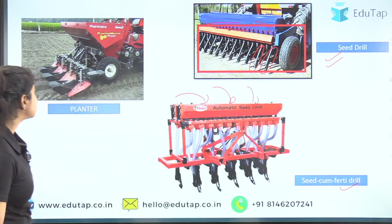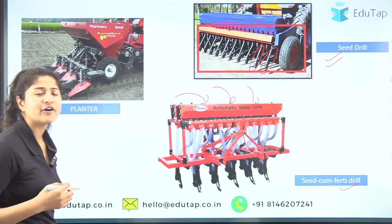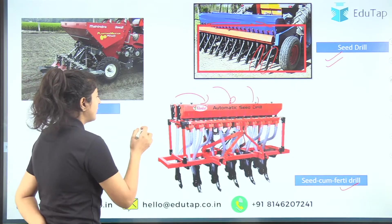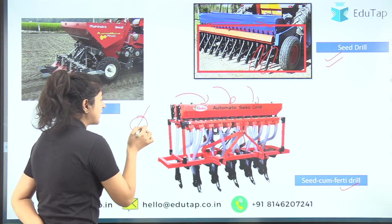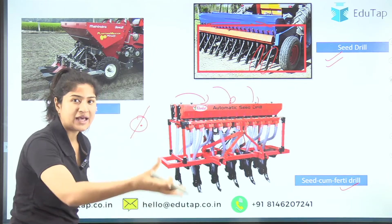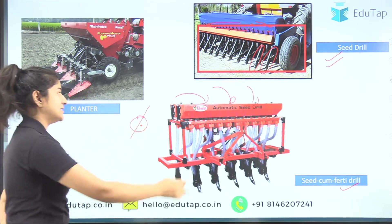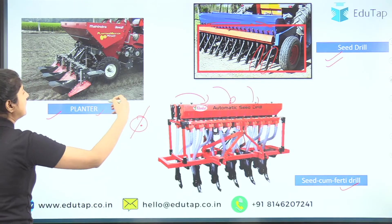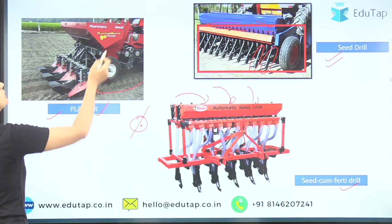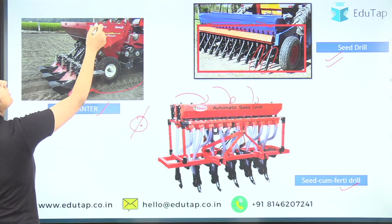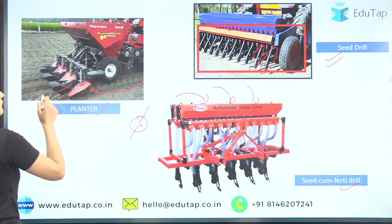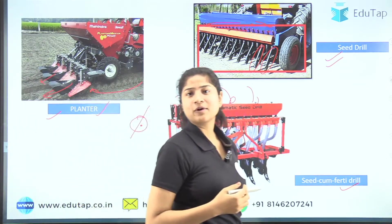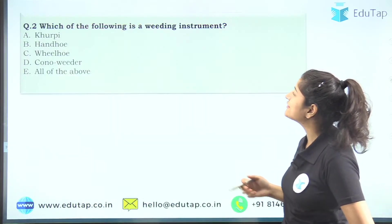The last implement is the planter, which was our answer. For example, in the case of potato, you do not sow seeds — instead you cut potatoes where the eyes are present and sow those. Because these are much larger in size and cannot pass through normal seed drill openings, the machinery used for this is the planter. The potatoes are cut, placed in the planter, and sown from this area.